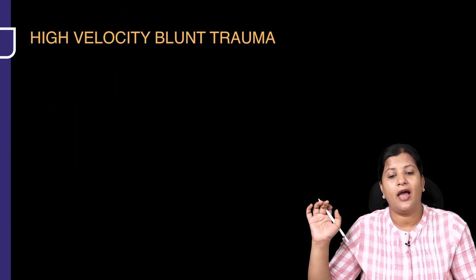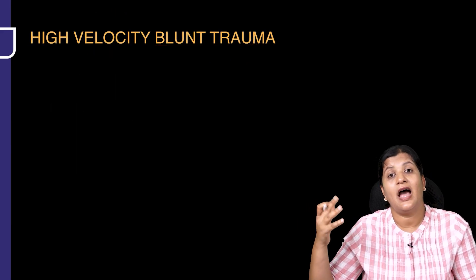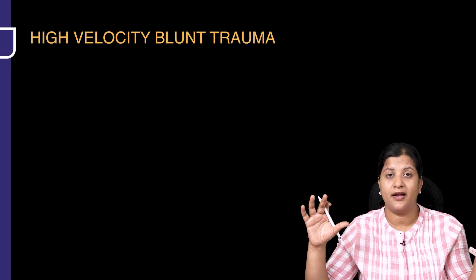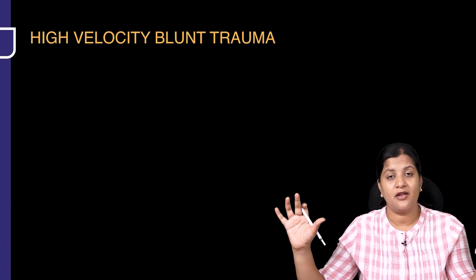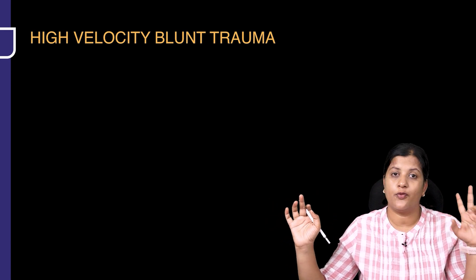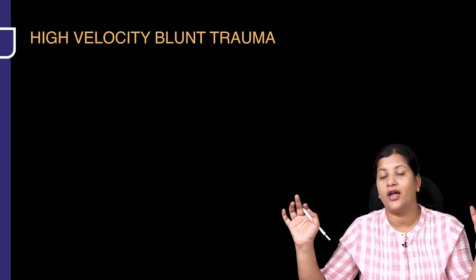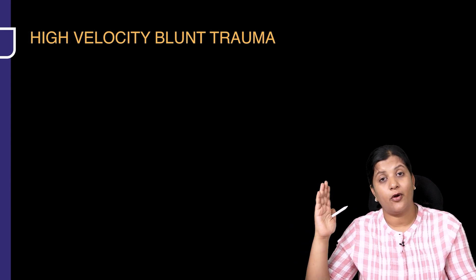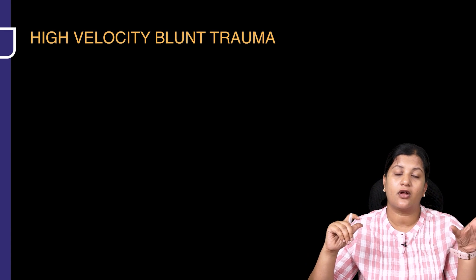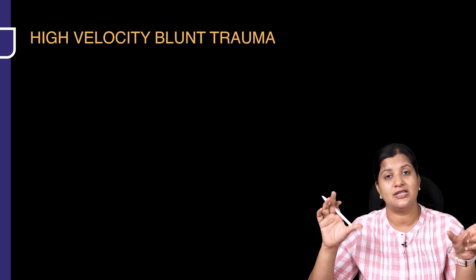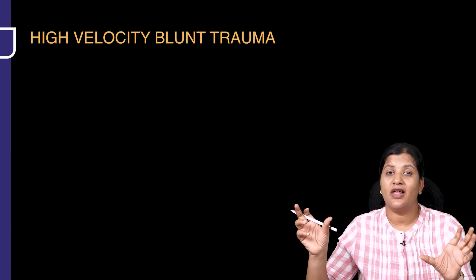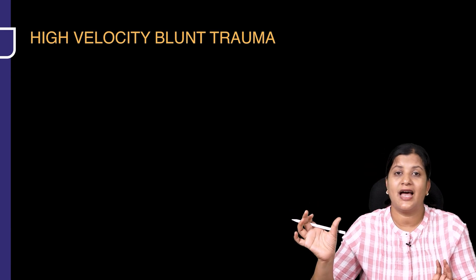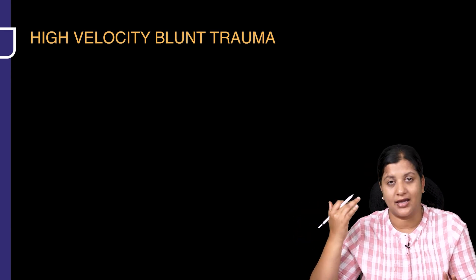Let us see what would happen if there is a high velocity blunt trauma. We categorized penetrating and blunt trauma. For penetrating, we identified two potential areas: the thyrohyoid and the cricothyroid membrane. For blunt trauma, we discussed low velocity and high velocity. We covered low velocity already, and now we are going to discuss high velocity trauma.